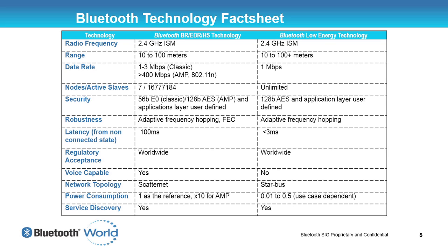In terms of security, Basic Rate uses a security scheme called E0 and then 128-bit AES in the AMP high-speed mode, with application-layer security possible on top. Bluetooth Low Energy uses 128-bit AES out of the box, and this is also being added into classic Bluetooth Basic Rate.